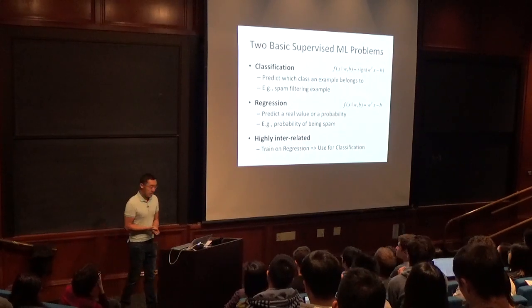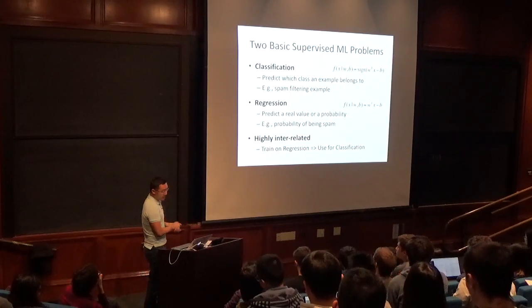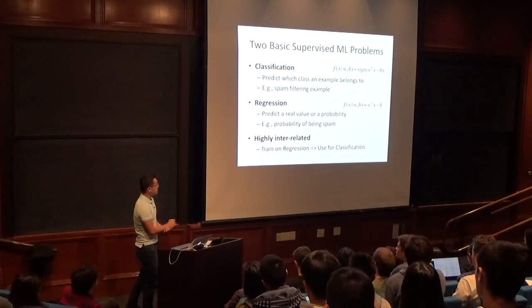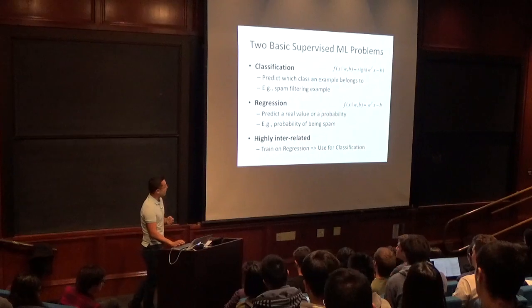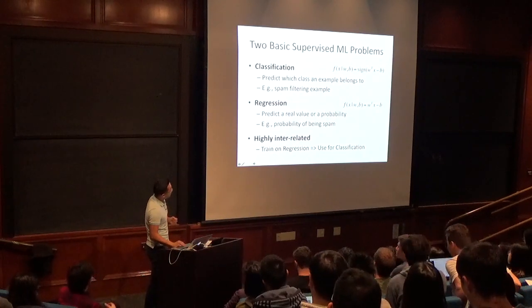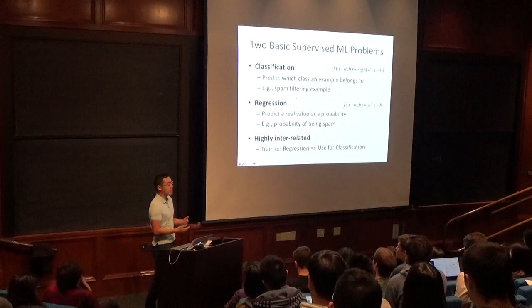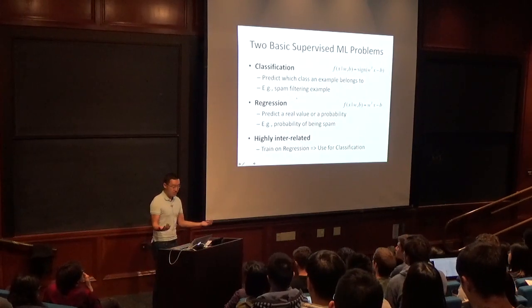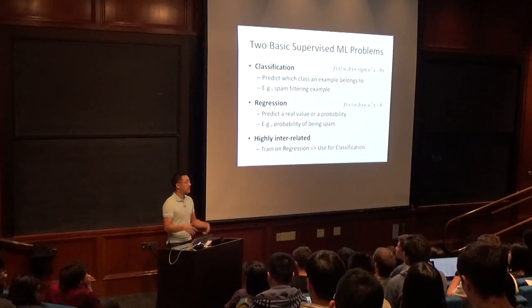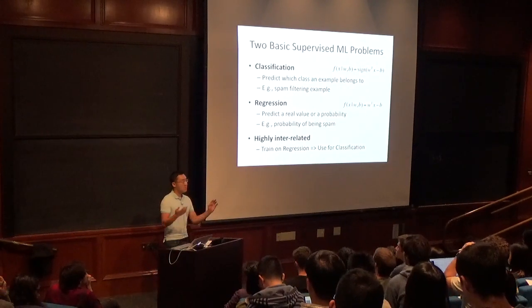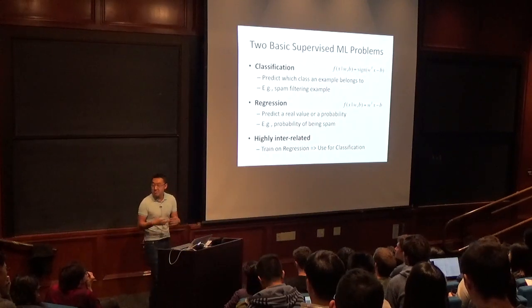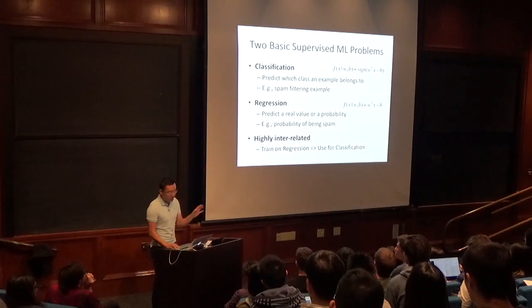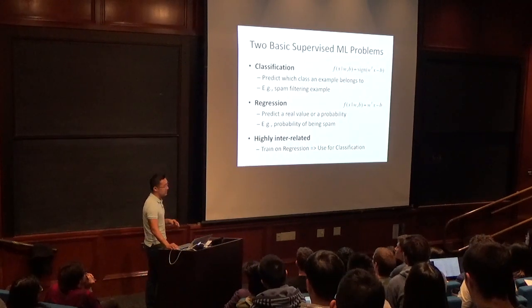Classification and regression are actually highly related — the form of the function classes is very similar. You can train a model to do regression using classification labels: treat spam as +1 and not spam as -1, train a regressor, and take the sign afterwards. It may not work as well as training directly for classification, but in some sense it can work pretty well. We'll discuss the relationship between regression and classification more later.